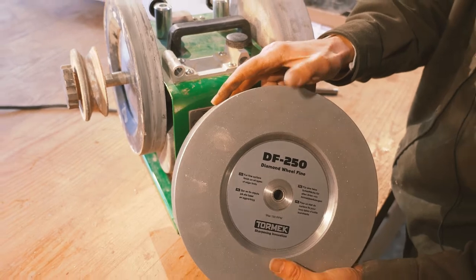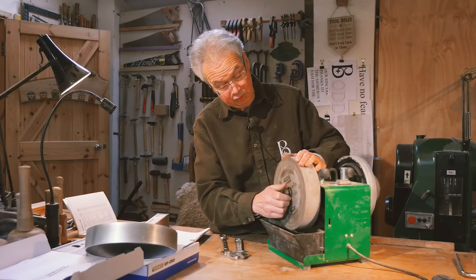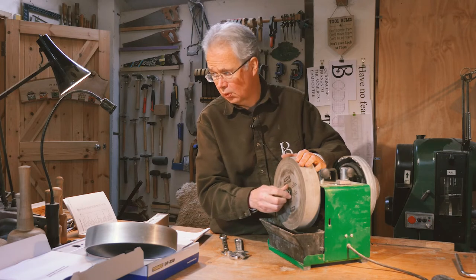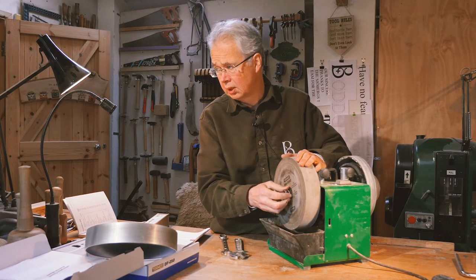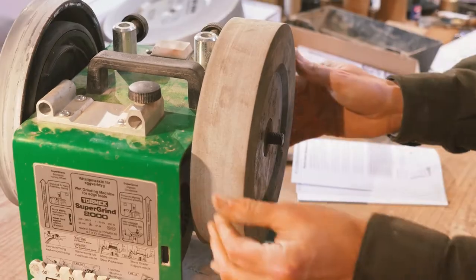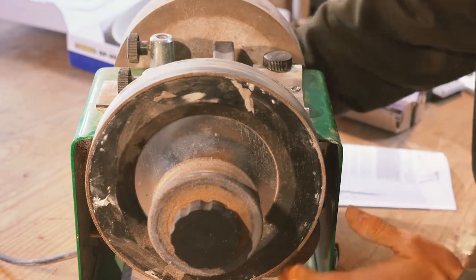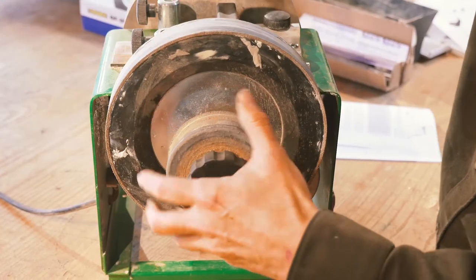So in order to get this new stone on, we have to get the old stone off. I haven't removed this wheel for probably 15 years I think. Now unsurprisingly, this stone is not moving, so let's attack it from the other side to loosen that whole unit off.